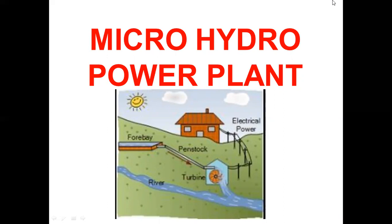Such micro hydro power plants are usually run by private entities. Sometimes when a micro hydro power plant generates up to 100 kilowatts and the requirement is only 50 or 80 kilowatts, the remaining power is given back to and sold to the national grid.